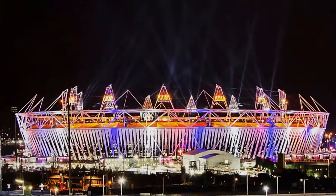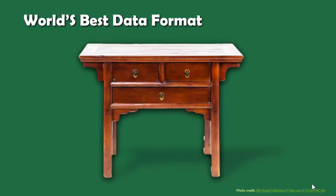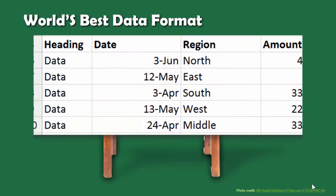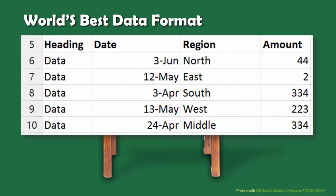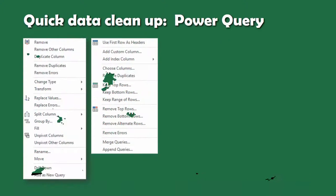The problem starts with the quality of data. The best data format is quite simple — it's called a table: multiple columns, multiple rows, each column must have a heading and consistent data below. Apply this checklist to every piece of data you get; if even one item is missing, send it back and demand it in good format.